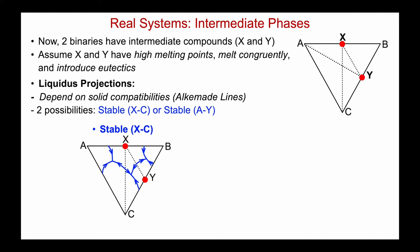If the XC Alcamadi line is stable — shown in the solid state compatibilities on the lower left — we can sketch the resultant liquidus projection. X is a high melting point with eutectics on either side in its binary, and the same for Y. On the BC side, a eutectic to the right of Y and a eutectic valley to the left of Y. When they merge into the system, I get three ternary invariant reactions. Let's label the primary phase fields: A, X, B, Y, and C.